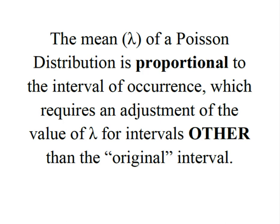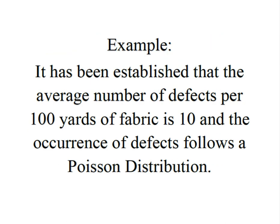The problem is that because the mean is proportional to the interval of occurrence, if we look at an interval other than the original interval that helped us establish the value of lambda, it requires us to make an adjustment. I think it's easier with an example.